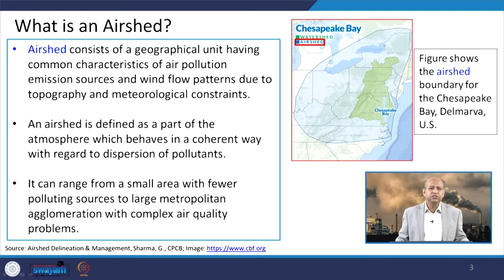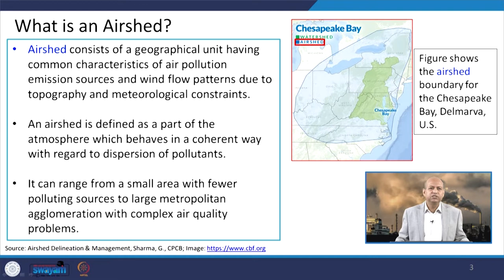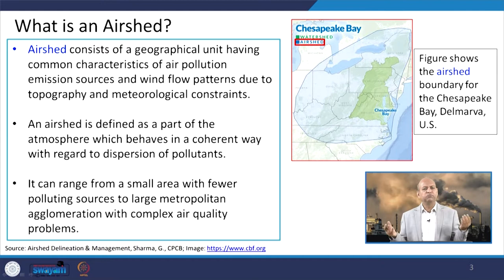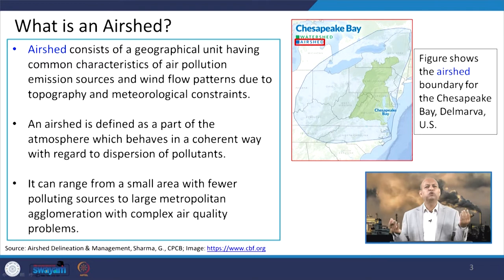When we talk about the air shed — what is an air shed? An air shed is basically a geographical unit, an area within some length, breadth, or height; topography is also there. This is a geographical unit which has common characteristics of air pollution emission sources and wind flow patterns due to certain topographic features or meteorological constraints.